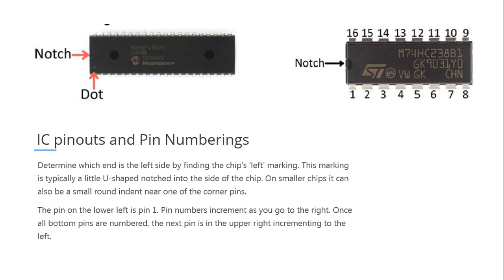The best way to determine pin numbers is by looking for the notch or the dot at the top of the IC. On a dual inline package, you'll see a small notch on one side that looks like a small letter C. Sometimes there's also a small dot on one of the corners — that dot signifies where pin number one is. If only a notch is present, the pin directly below it on the left side is pin number one. The pin nearest to the dot is also pin number one.